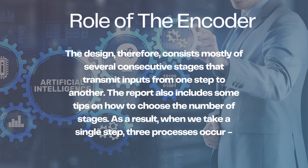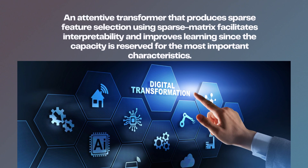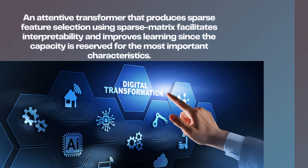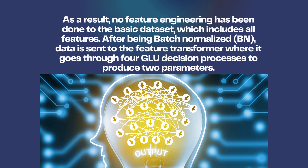Role of the encoder: the design consists mostly of several consecutive stages that transmit inputs from one step to another. The report also includes some tips on how to choose the number of stages. When we take a single step, three processes occur: four successive GLU decision blocks make up the feature transformers; an attentive transformer that produces sparse feature selection using a sparse matrix facilitates interpretability and improves learning since capacity is reserved for the most important characteristics; and the mask, together with the transformer, is used to output the decision-making parameters N, D and N, A, which are then passed on to the final phase. No feature engineering has been done to the basic data set, which includes all features.